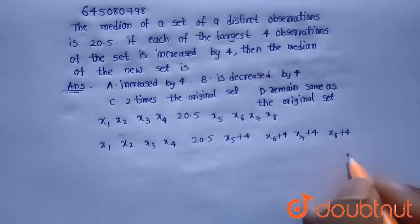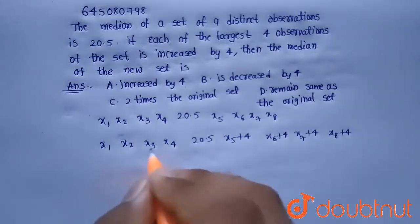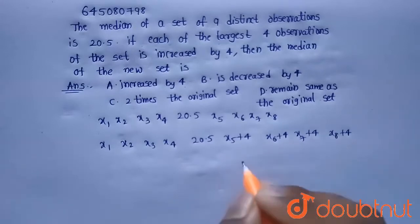Now if you write this in increasing order, it is in the same order x1, x2 because x1, x2, x3 less than x4 and 20.5 is less than the 4 observations. So if you write in the ascending order, this will be the same order.